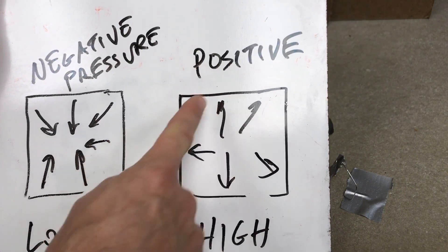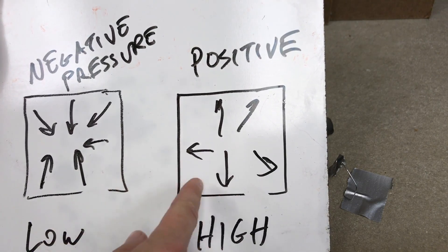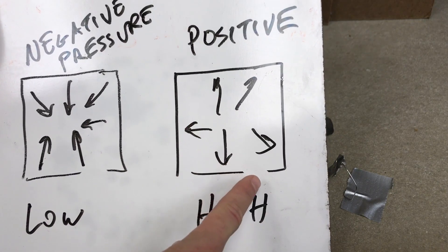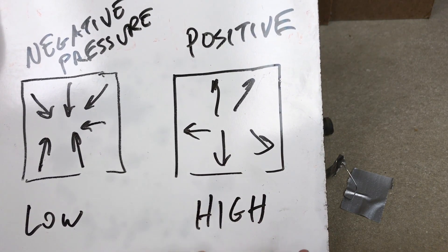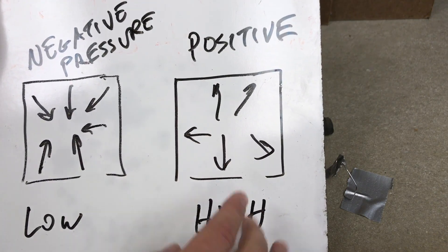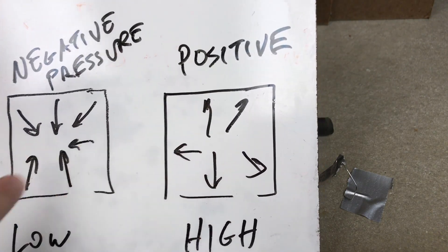The other option is positive pressure or high pressure and so you have a higher pressure inside your suit. Now in this case if you have a hole the other is bad stuff out here but the bad stuff can't get in because the air inside is going out. So that's what you want to do, you want to do positive pressure.